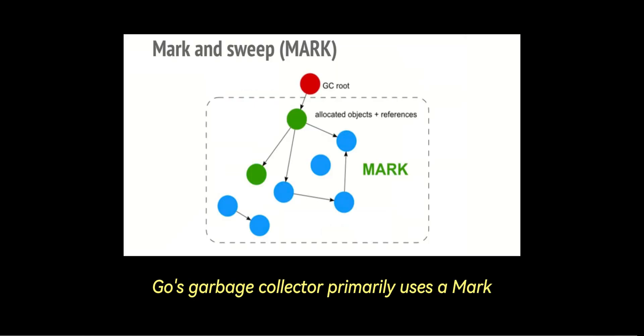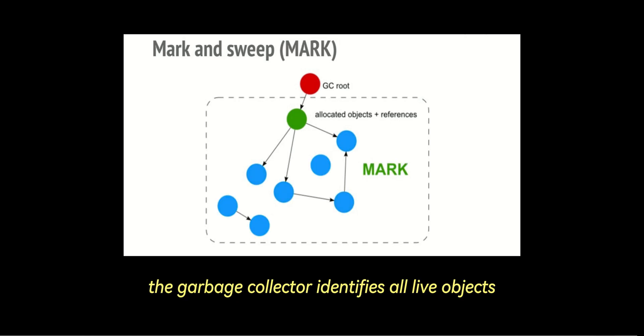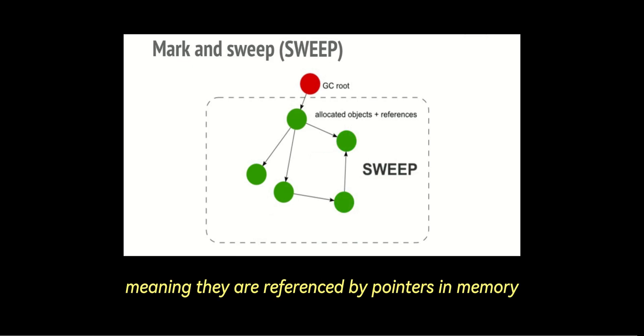Go's garbage collector primarily uses a mark and sweep algorithm. In the mark phase, the garbage collector identifies all live objects, which are those still reachable by the application, meaning they are referenced by pointers in memory.